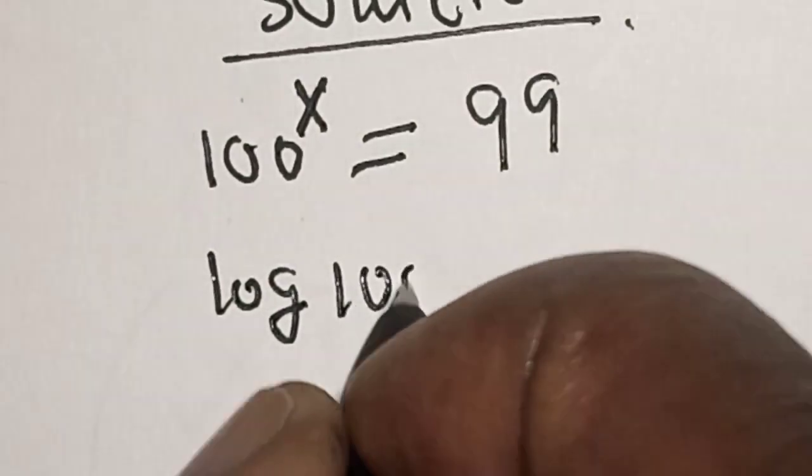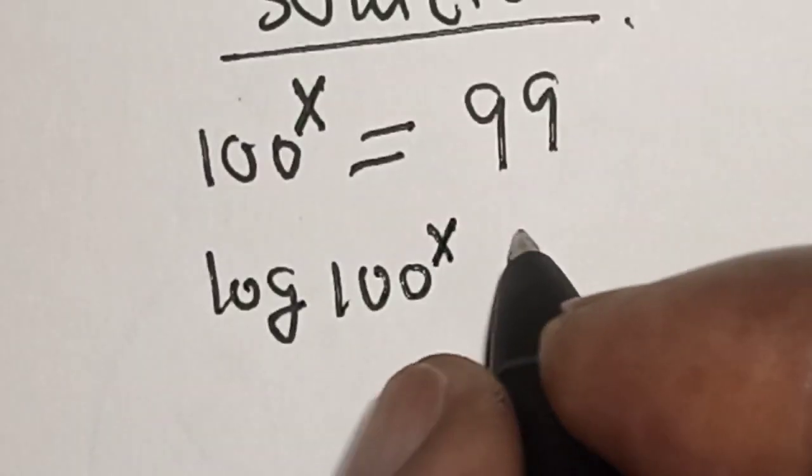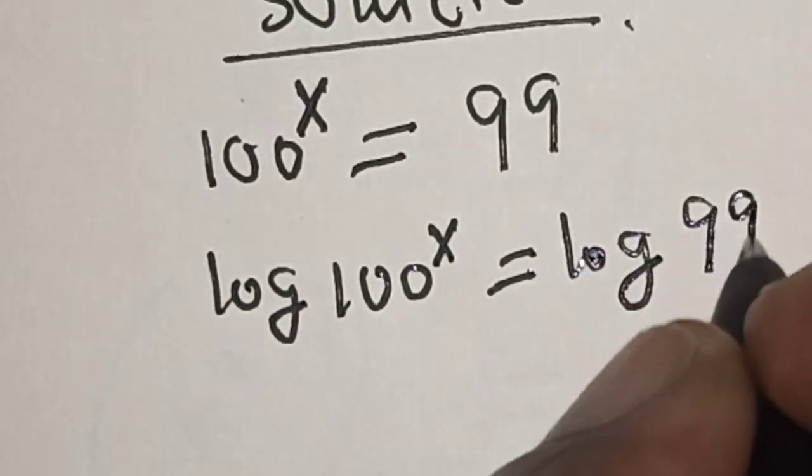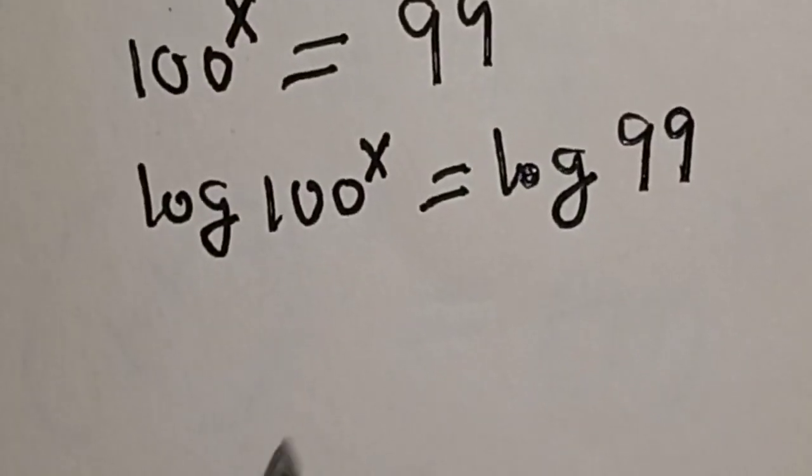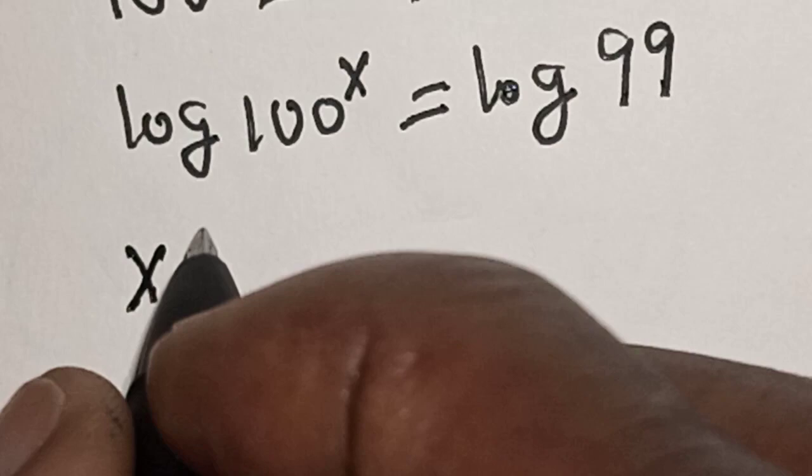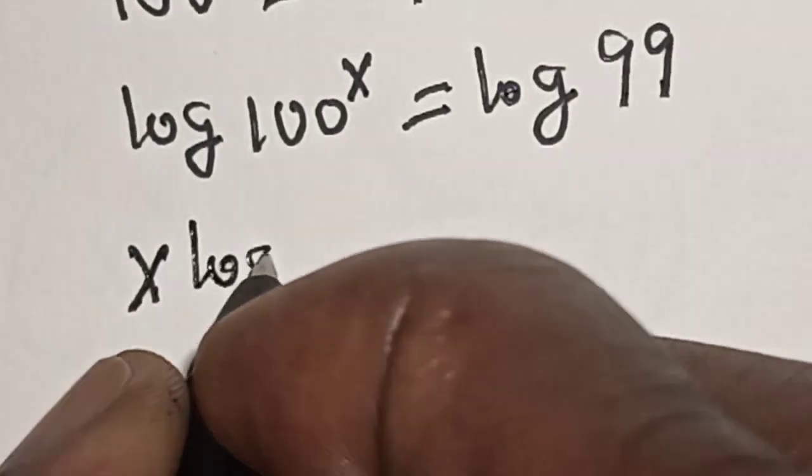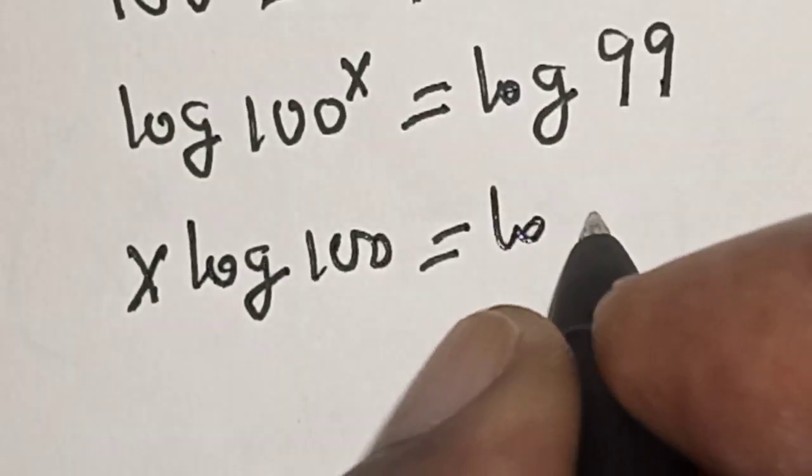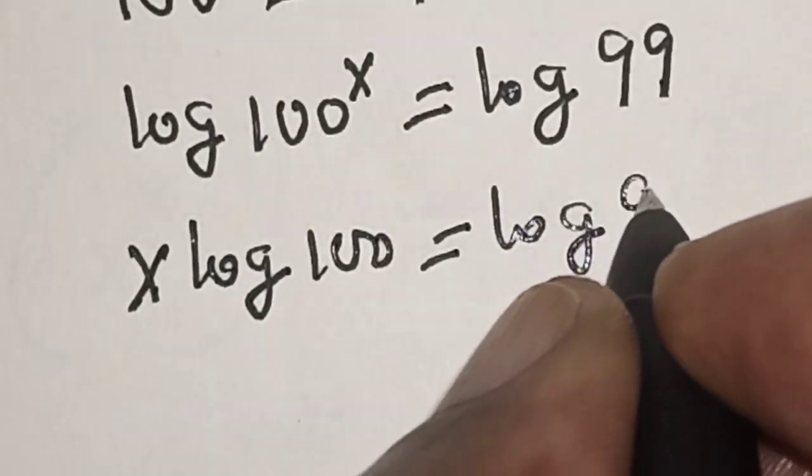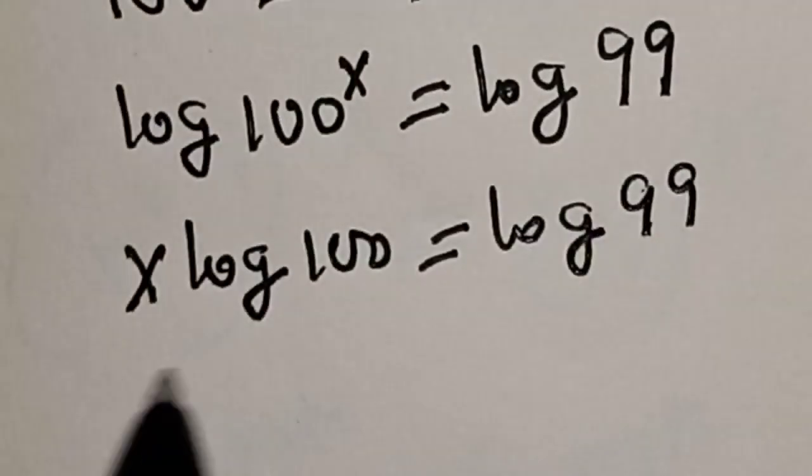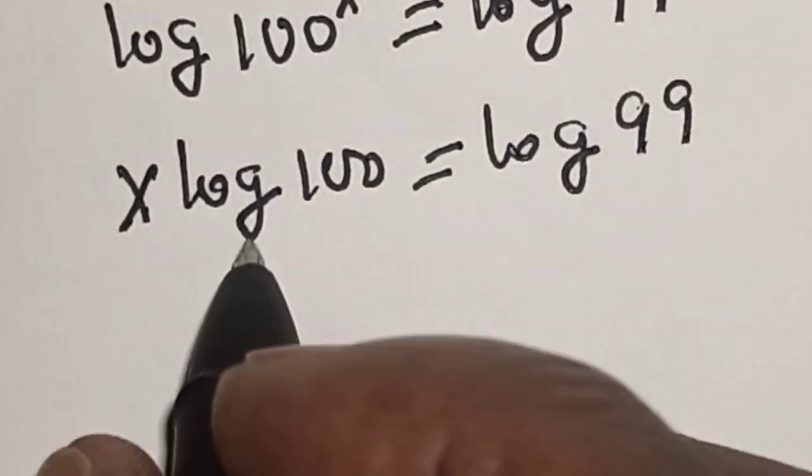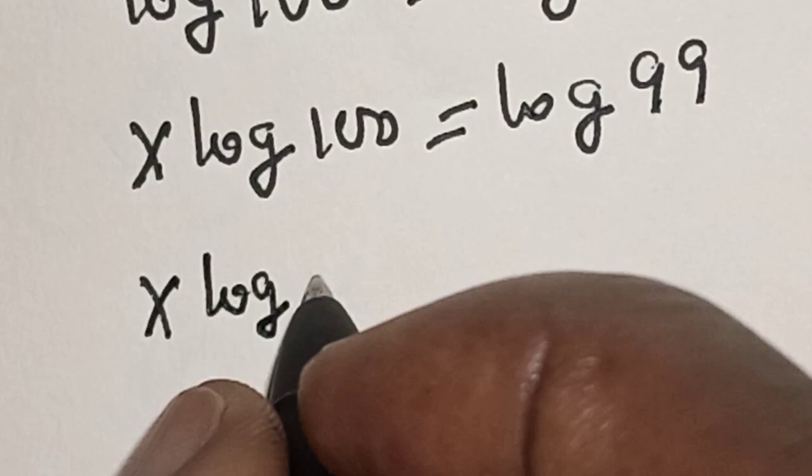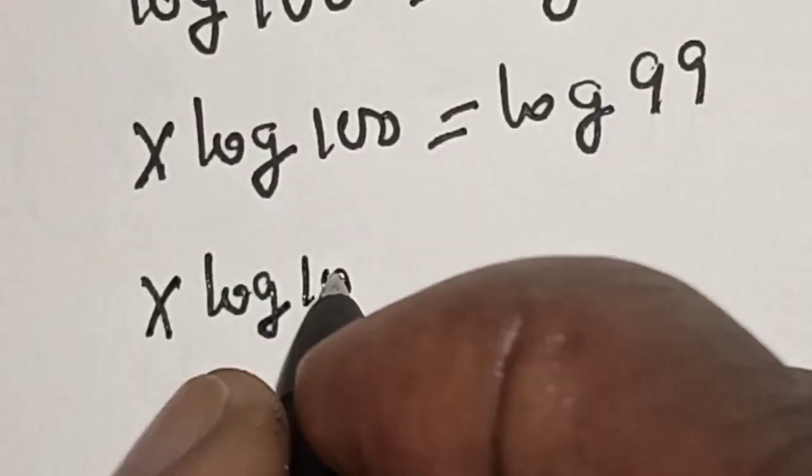Log 100 raised to power x is equal to log 99. This becomes x log 100 is equal to log 99. Now, 100 is 10 squared.